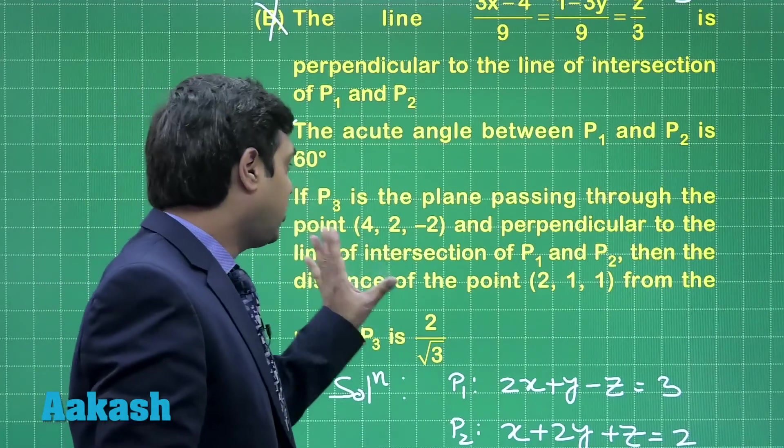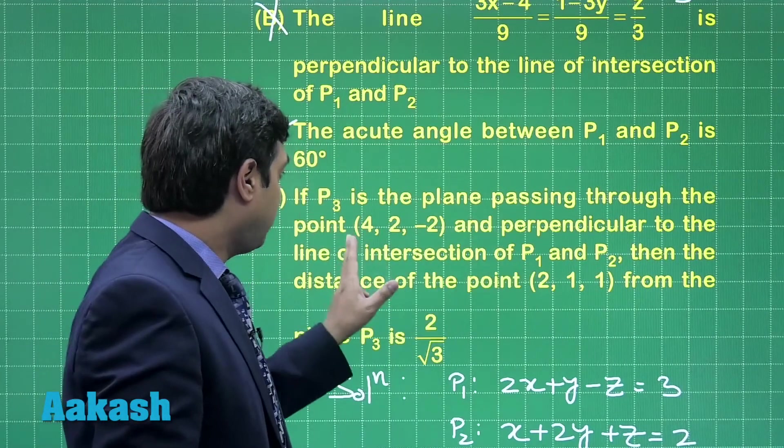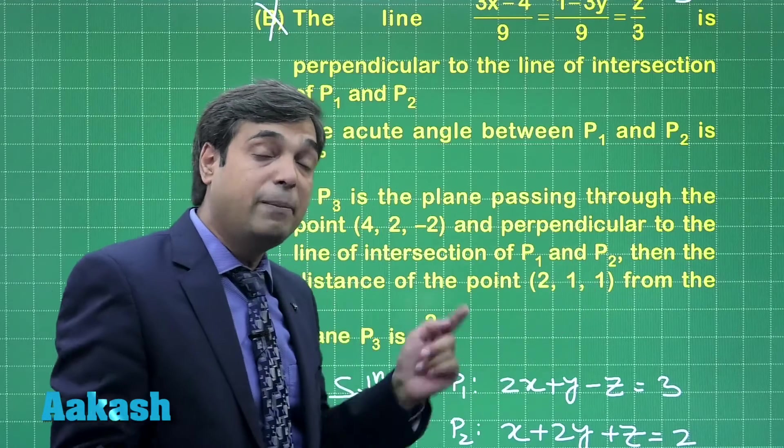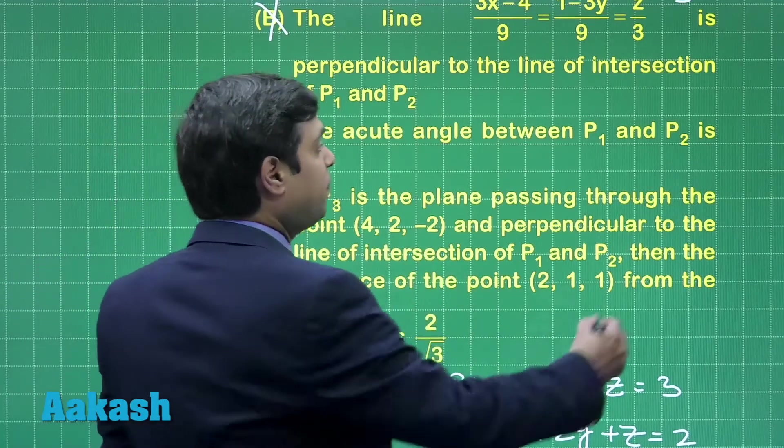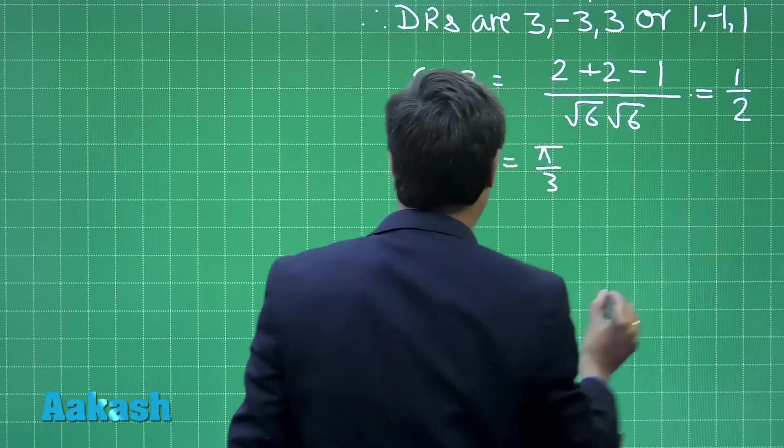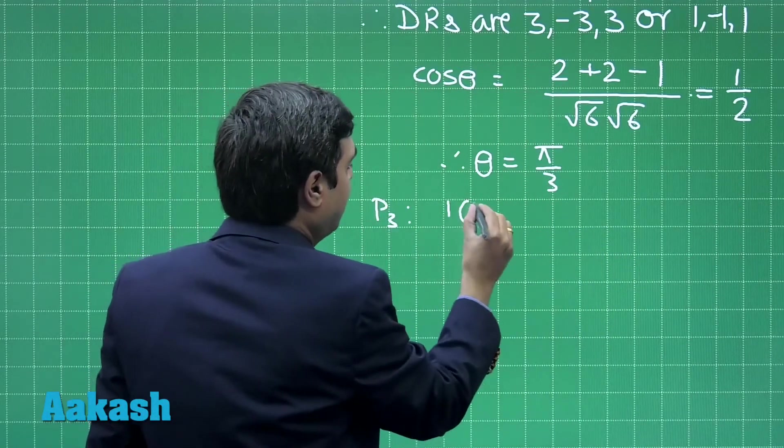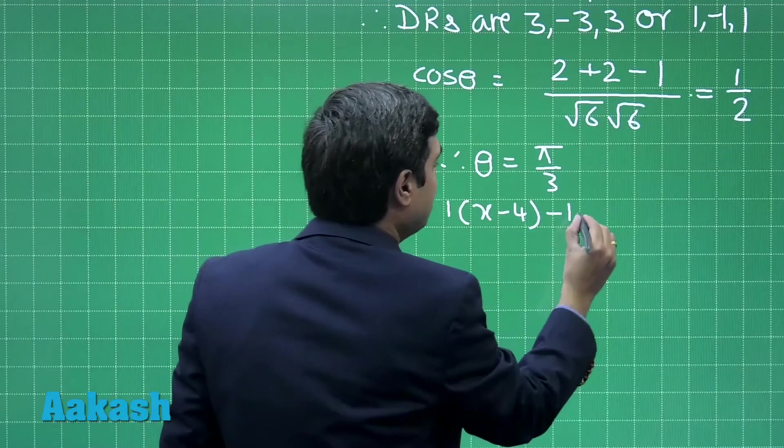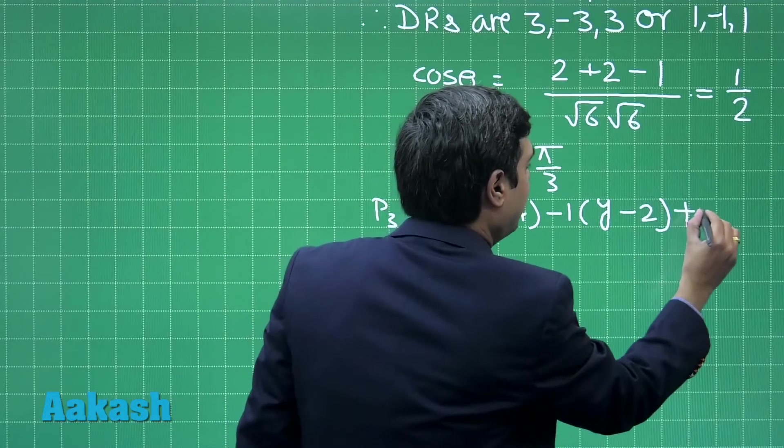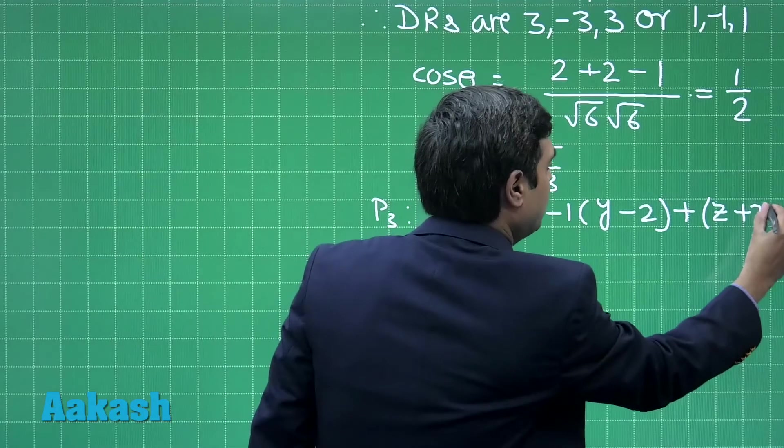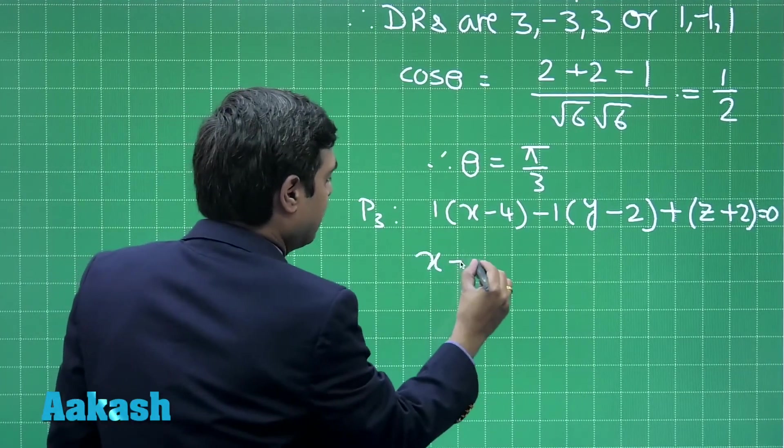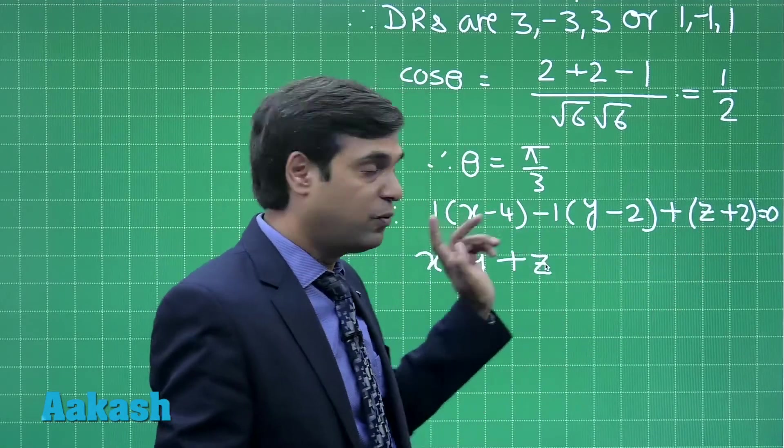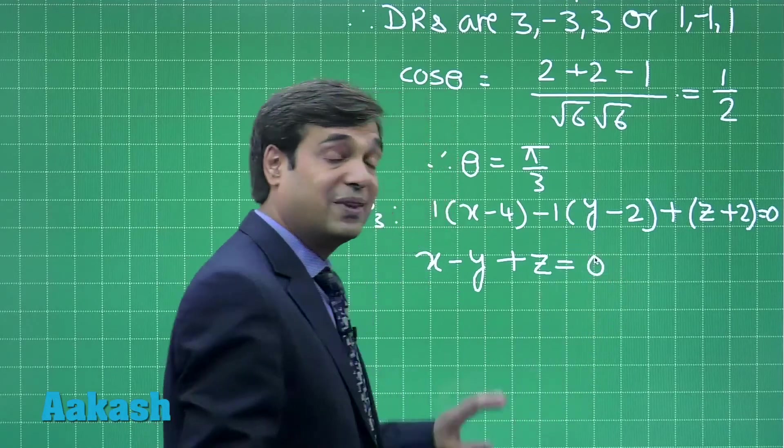Fourth, plane P3 passing through the point (4, 2, minus 2) and perpendicular to the line of intersection of P1 and P2, meaning the direction ratios of normal are same as obtained earlier: 1, minus 1, and 1. Simply we can write plane P3 as 1(x minus 4) minus 1(y minus 2) plus 1(z plus 2) equals 0. That is, x minus y plus z, and the constant term we see here is 4 and the other one is plus 4 cancelled out. This is equal to 0. This is the equation of plane P3.